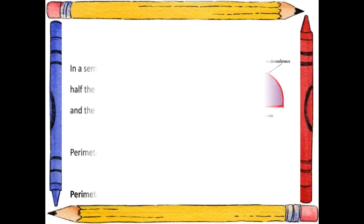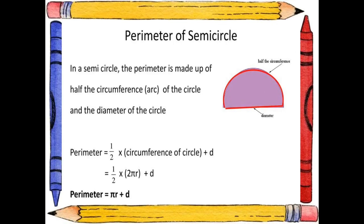The next topic is perimeter of a semicircle. The perimeter is made up of half the circumference or arc of the circle and the diameter of the circle. So, perimeter = (1/2) × 2πR + D, which simplifies to perimeter = πR + D.